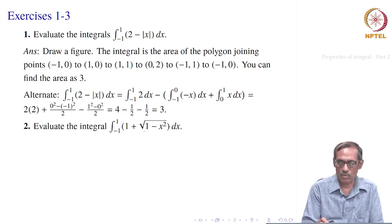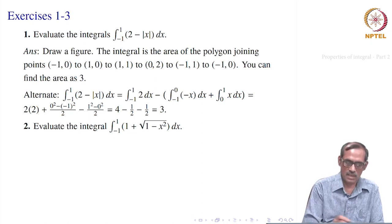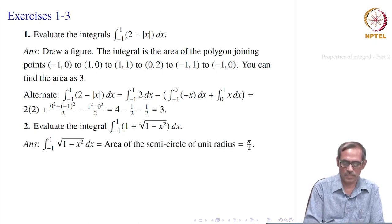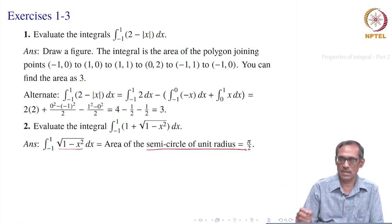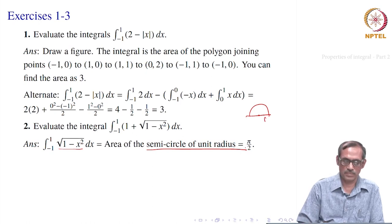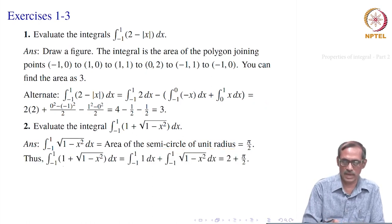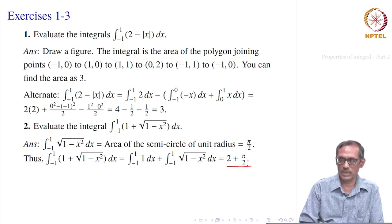For ∫₋₁¹ (1 + √(1−x²)) dx: the curve y = √(1−x²) describes the upper semicircle of unit radius lying above the x-axis, and its area is π/2. Using linearity of the integral: ∫₋₁¹ 1 dx + ∫₋₁¹ √(1−x²) dx = 2 + π/2.